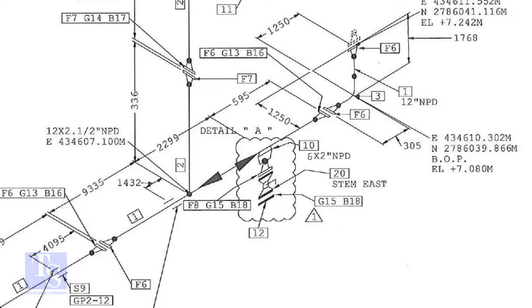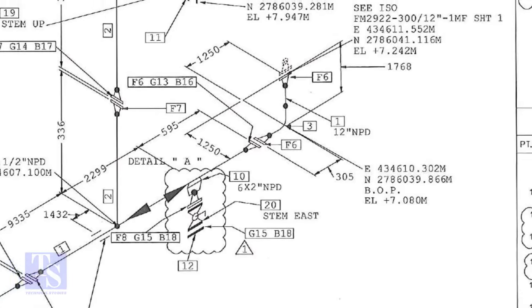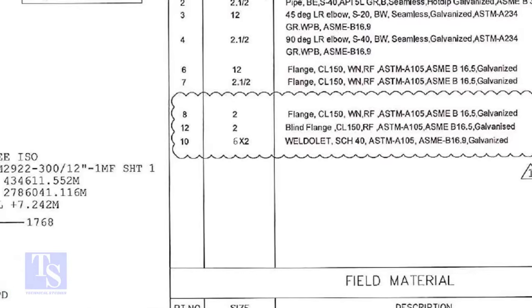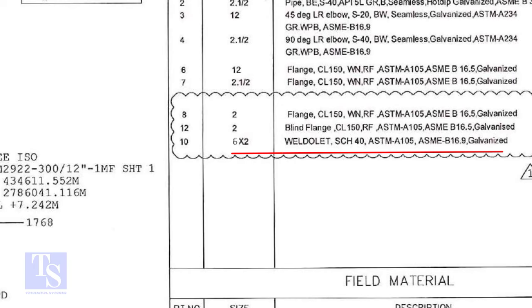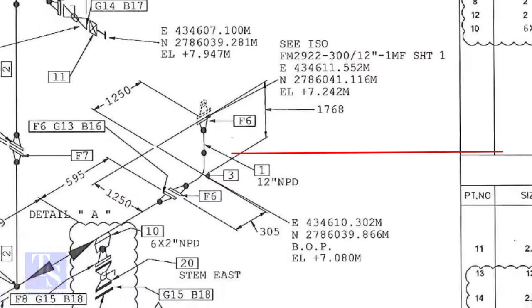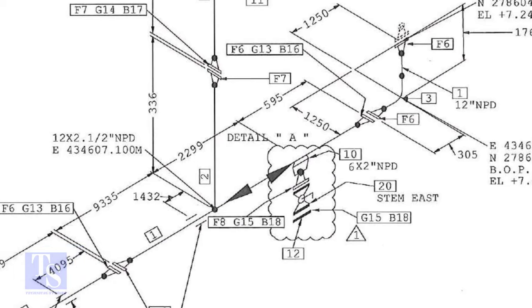Let us check what is item number 10 in the description. The center of the weldolet is 595 millimeters away from the face of the flange. Now we are going to mark this distance on a pipe with a flange fitted on it.